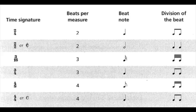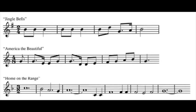Here in this table are some typical simple time signatures. Two-four tells us there are two quarter notes in the bar. Two-two tells us there are two half notes in a bar. Three-sixteen tells us there are three sixteenth notes in a bar. Three-four gives three quarter notes in a bar. Four-eight gives four eighth notes in a bar. Four-four, or common time, gives four quarter notes in a bar. Jingle Bells, for example, could be notated correctly in two-two, two-four, two-eight, or any other simple duple time signature.